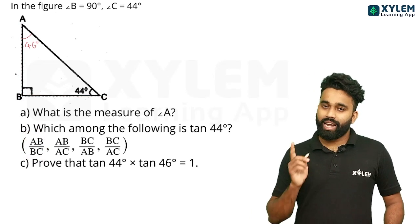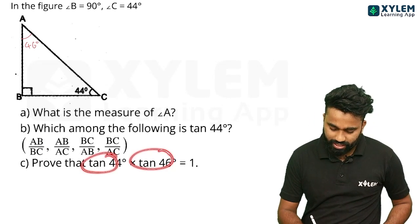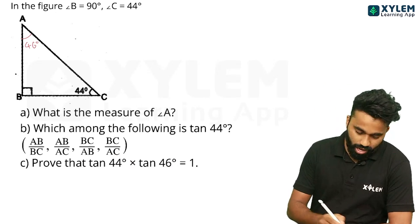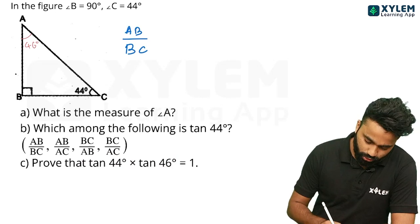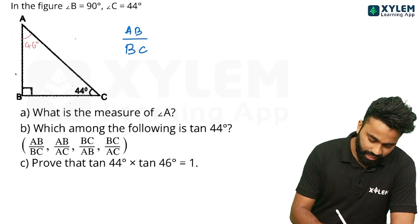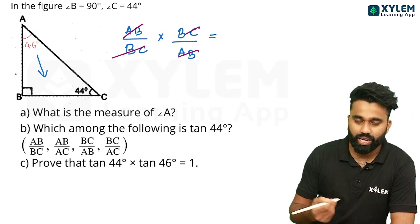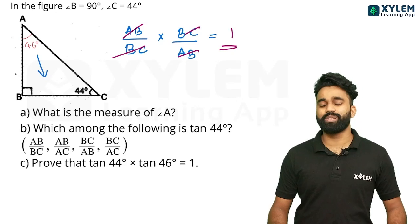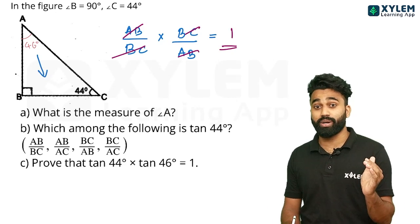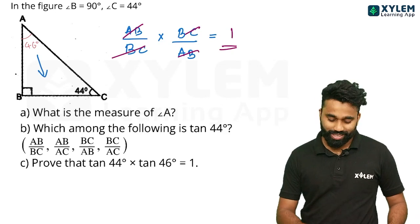First option, two marks. After the question: tan 44 and tan 46. Tan is opposite by adjacent, AB by BC. And tan 46 is opposite by adjacent, BC by AB. AB by AB, and the answer is 1. Hence proved. This is a full mark. Three simple steps. The answer is 30.